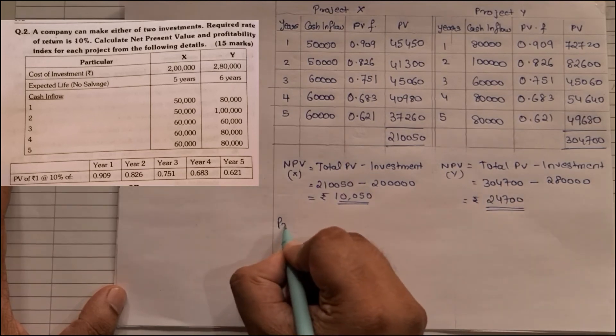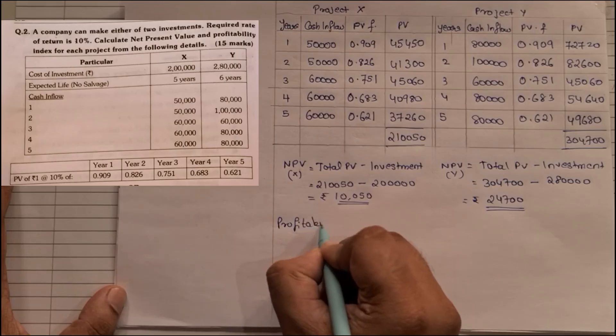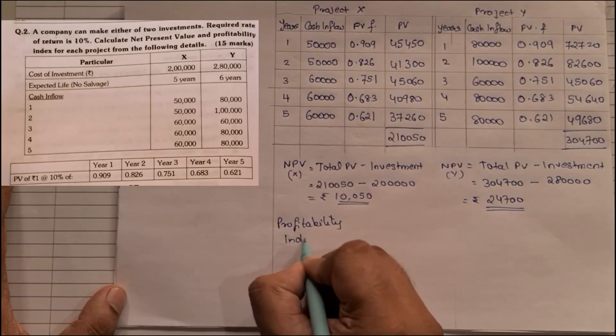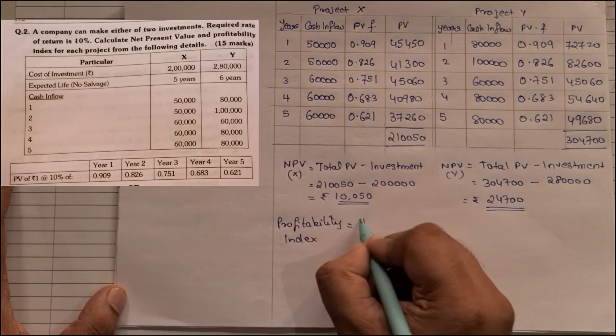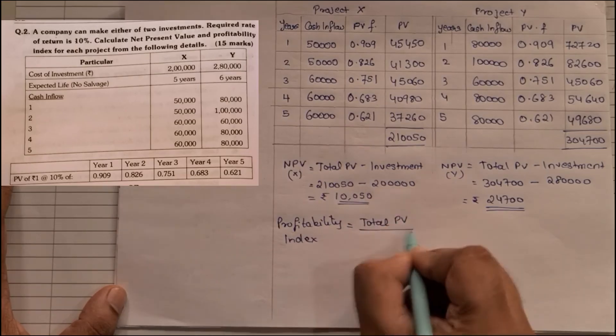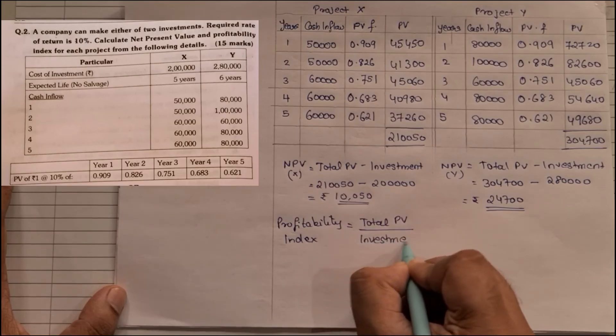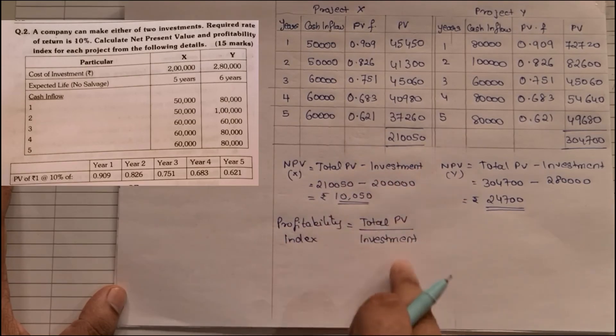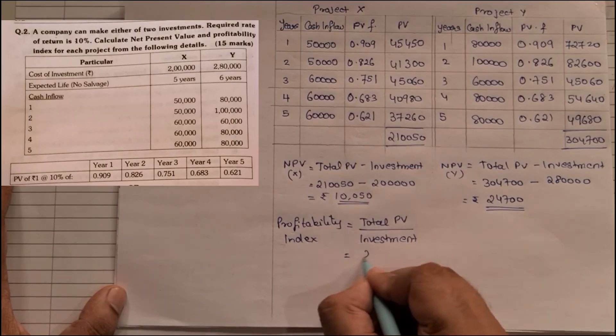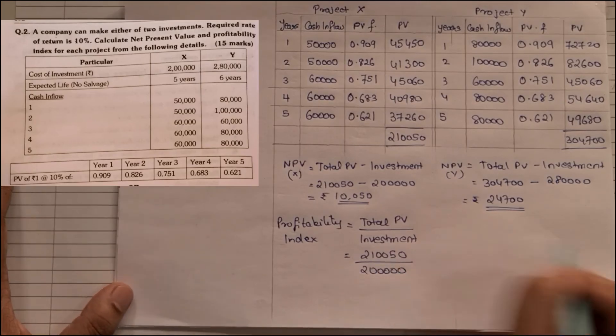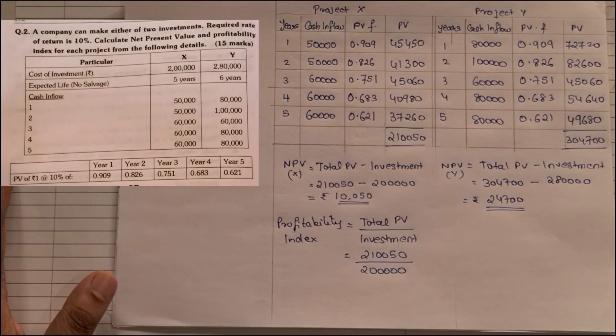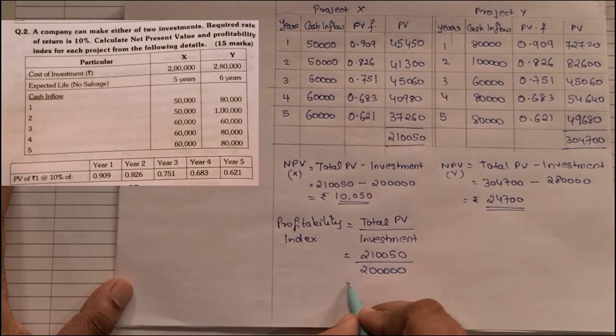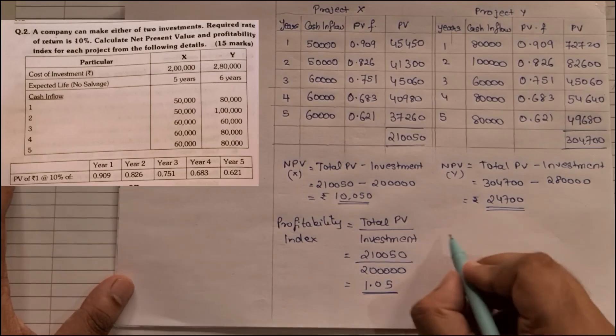Now profitability index. The formula is very simple: total PV upon investment. This was minus, now this is divide. So 2,10,050 upon 2 lakhs. So this will become 2,10,050 divided by 2 lakhs, which comes to 1.05.